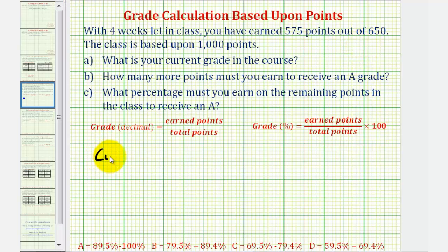So the current grade is going to be equal to the points earned, which is 575, divided by the available total points right now, which would be 650. This would give the grade as a decimal, and then to convert to a percentage, we will multiply by 100. So we're finding this fraction of 100 to find our grade as a percentage.